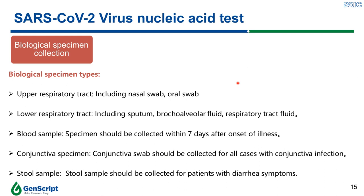The first step involves biological specimen collection. Since the SARS-CoV-2 virus causes respiratory illness, the respiratory system is the main target for sample collection. The respiratory system consists of the upper and lower respiratory tracts. The most commonly used methods to collect samples include nasal swab, oral swab, sputum, bronchoalveolar fluid, and respiratory tract fluid.